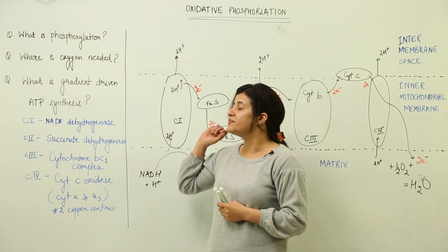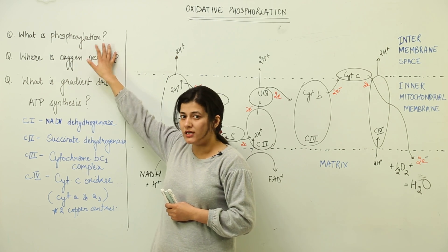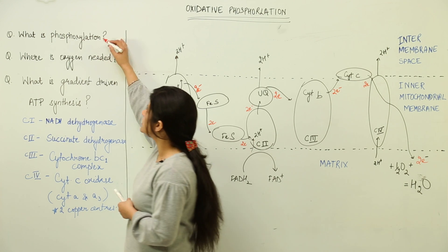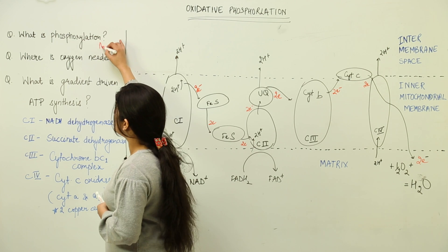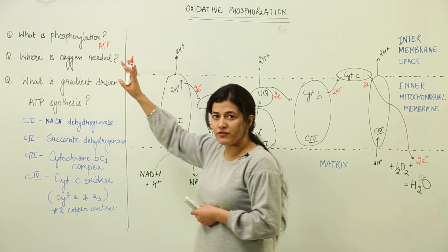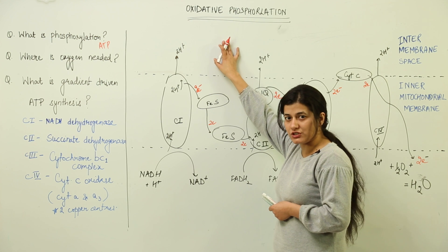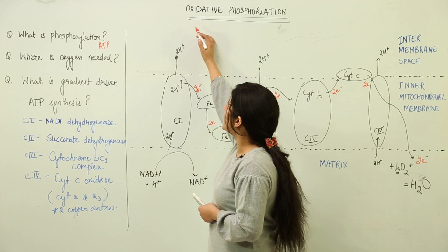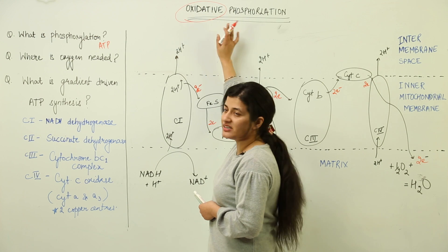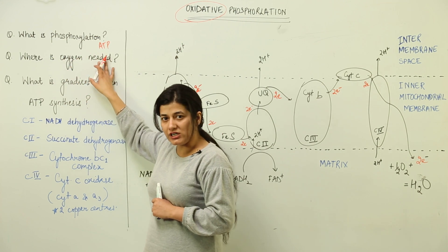A few questions come to mind. First: what is phosphorylation? The process of formation of ATP is known as phosphorylation. Because the third step is called oxidative phosphorylation, you need to understand that oxygen is going to be involved in this entire process of ATP generation. So where exactly is oxygen needed?